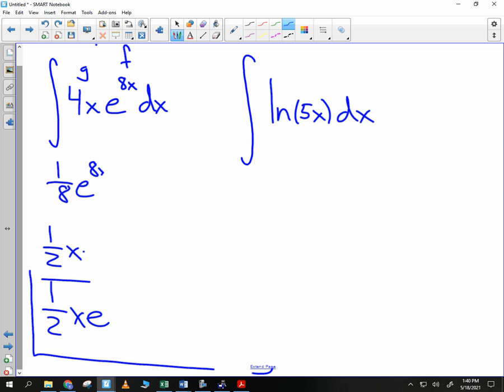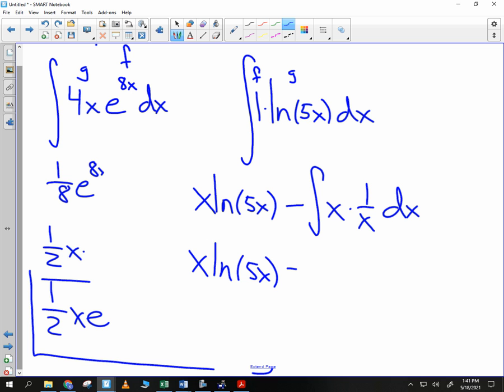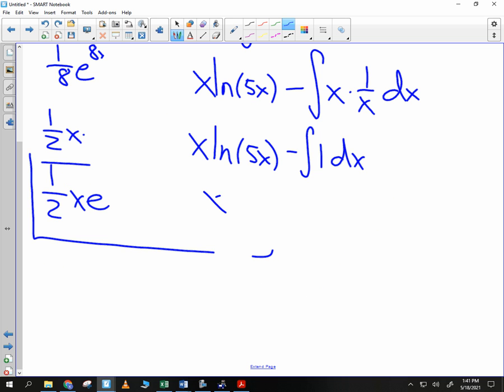The integral of natural log of 5x. I only see one function there. What's my other function? 1 is the function, so that means that has to be f and this has to be g. What's the antiderivative of 1? x times the natural log of 5x minus the integral of x times, what's the derivative of natural log of 5x? 1 over x. Or in other words, x natural log of 5x minus the integral of 1 dx. What's the antiderivative of 1? x. So you have x natural log of 5x minus x plus a constant.